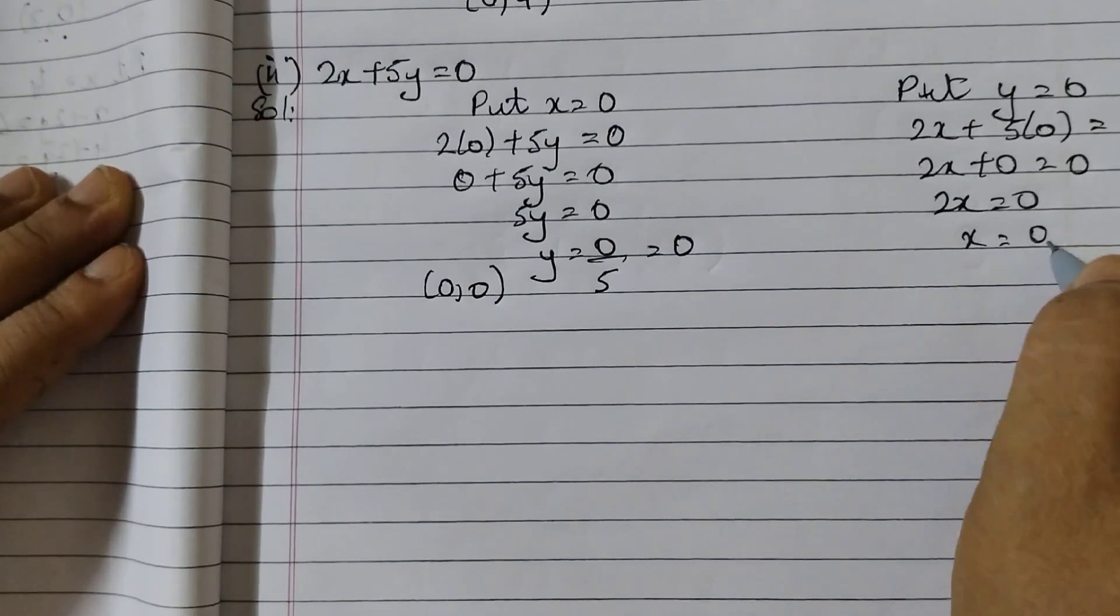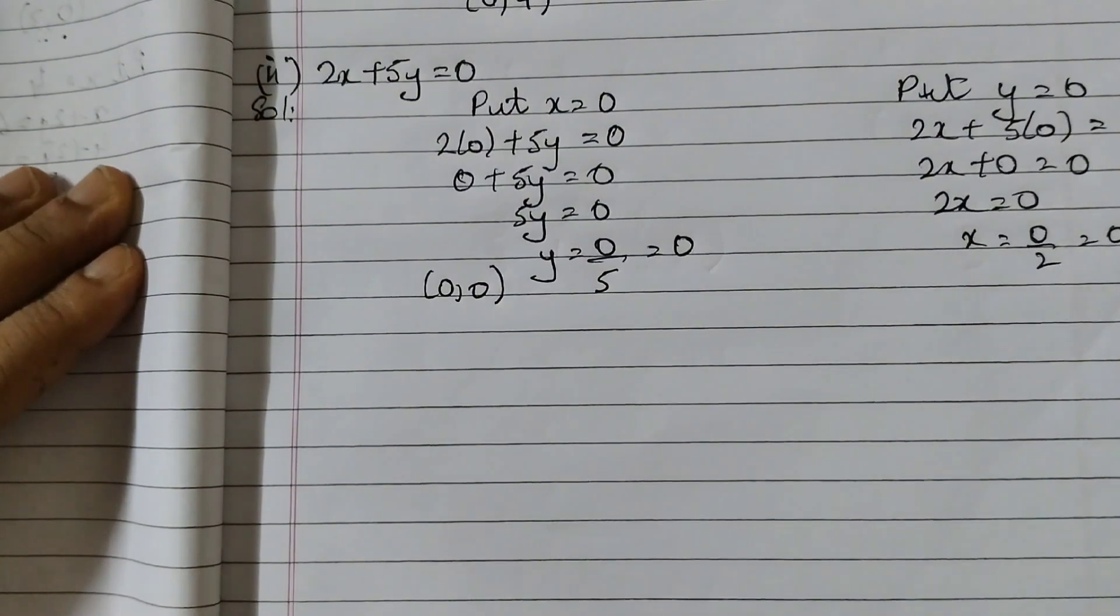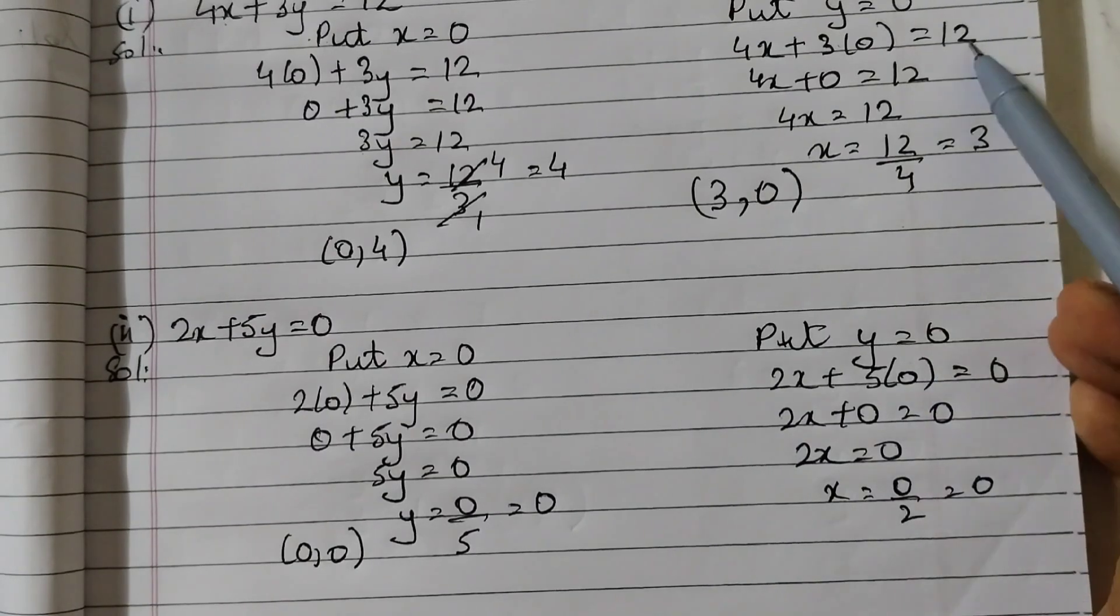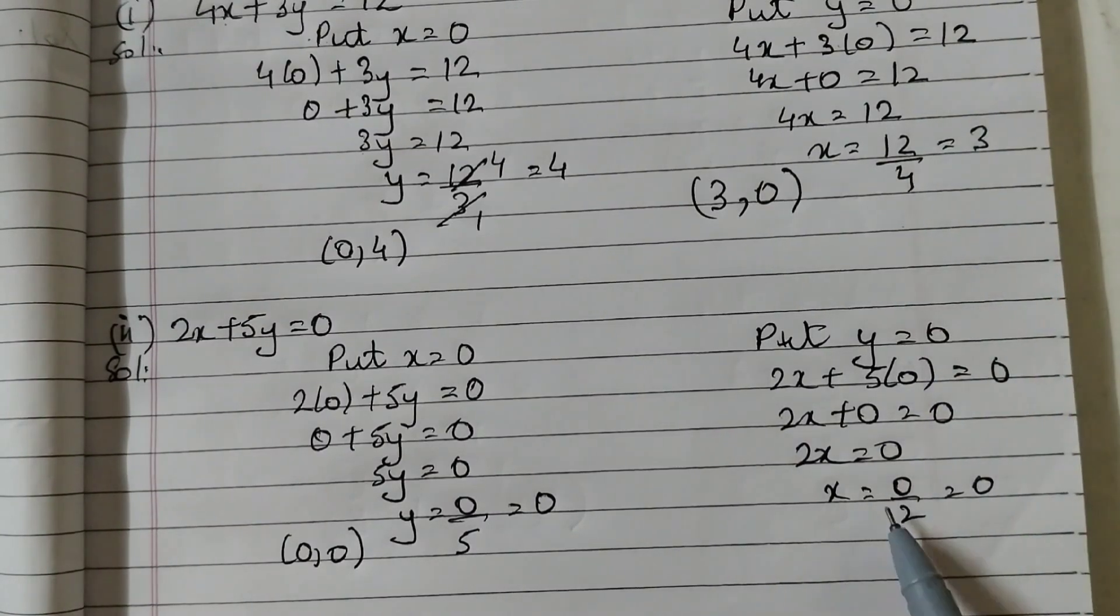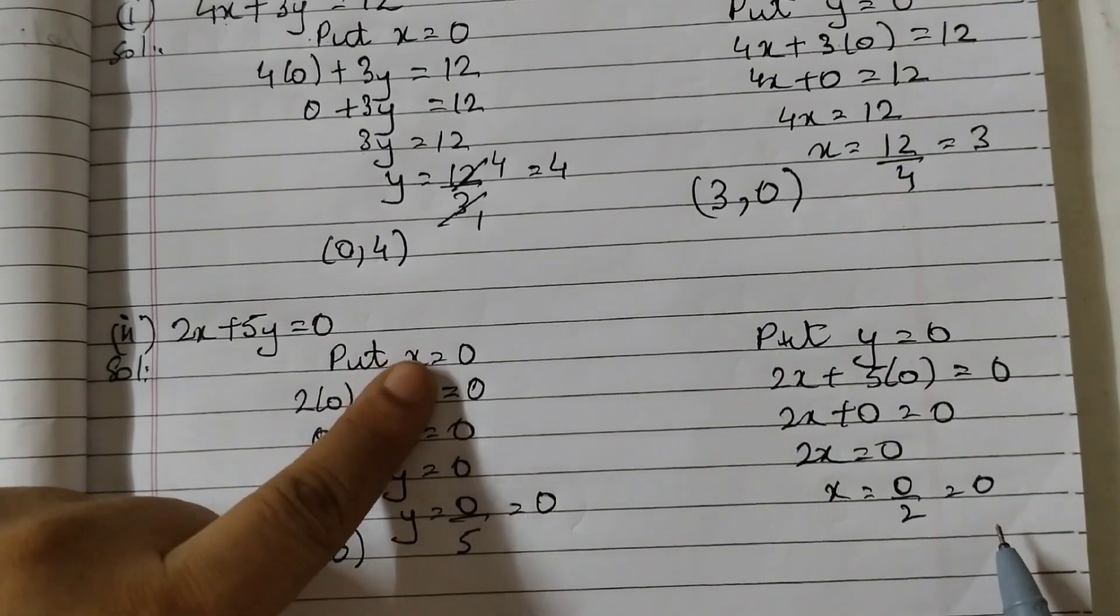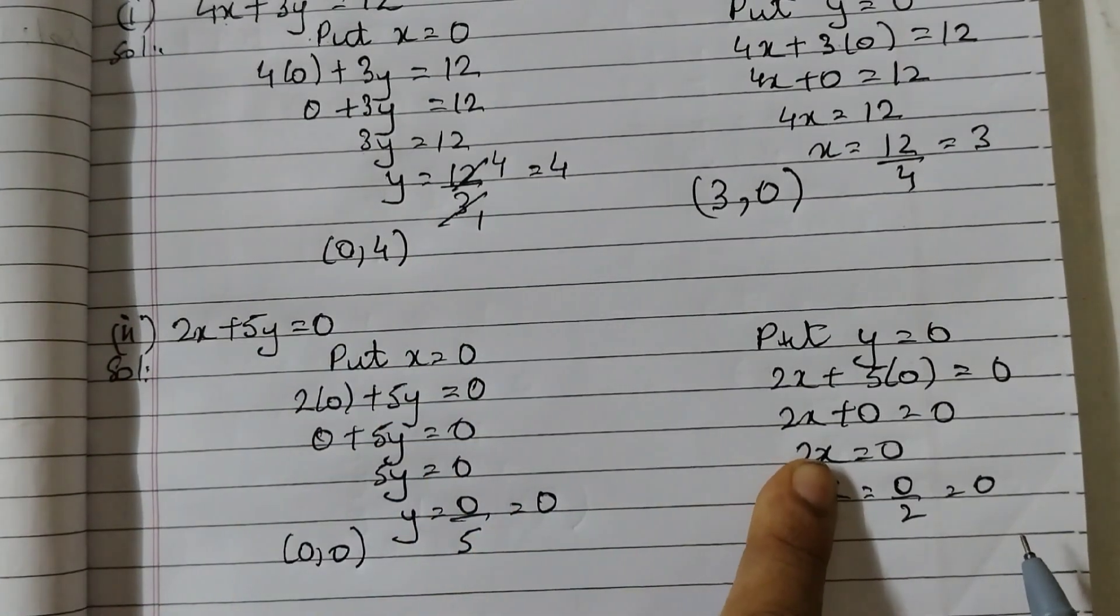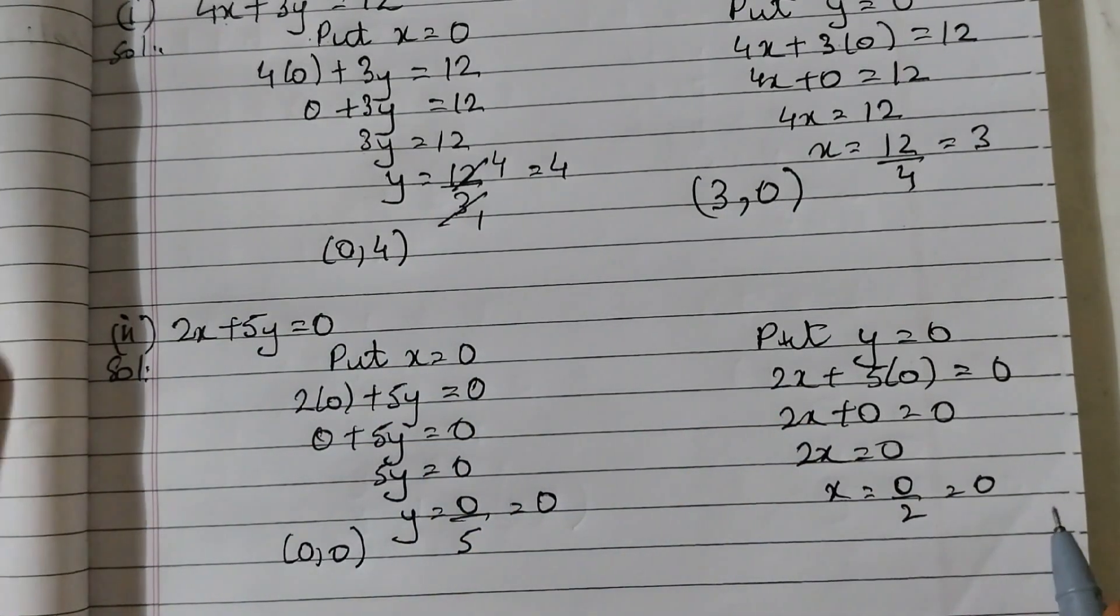Now see here if you put y is equal to 0 like you did in the previous one. If you do that then again you're getting a 0 because here when you're putting 0 we're getting 0. So this will not work in this case. We have to take some other value for y.